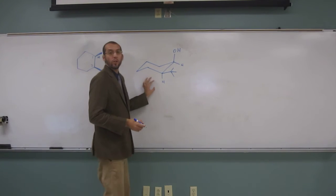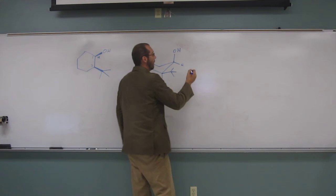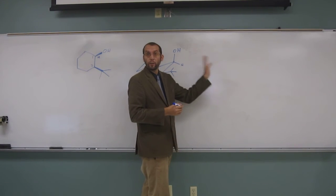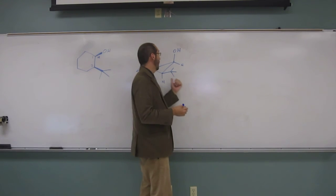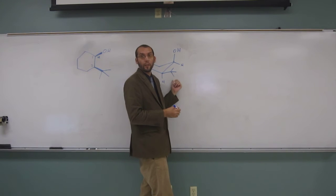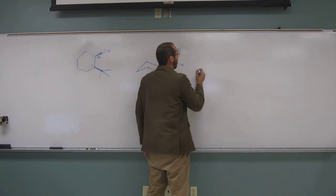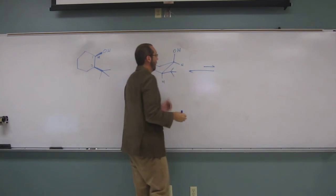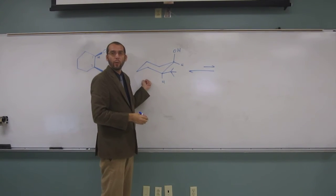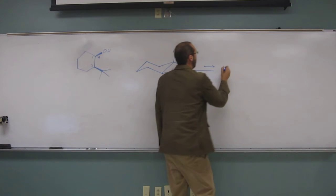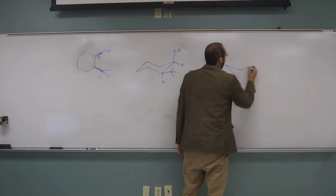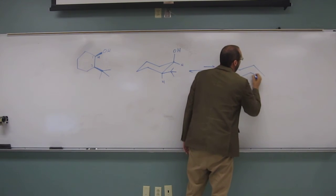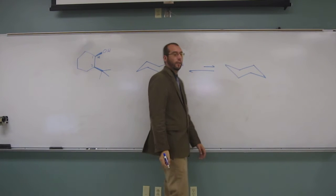So just to show you, I'm going to show the other chair conformation, and it'll make this axial, and this one equatorial. So in other words, if we do a chair flip, this conformation is much more favored. So draw like that. That's one, that's two.